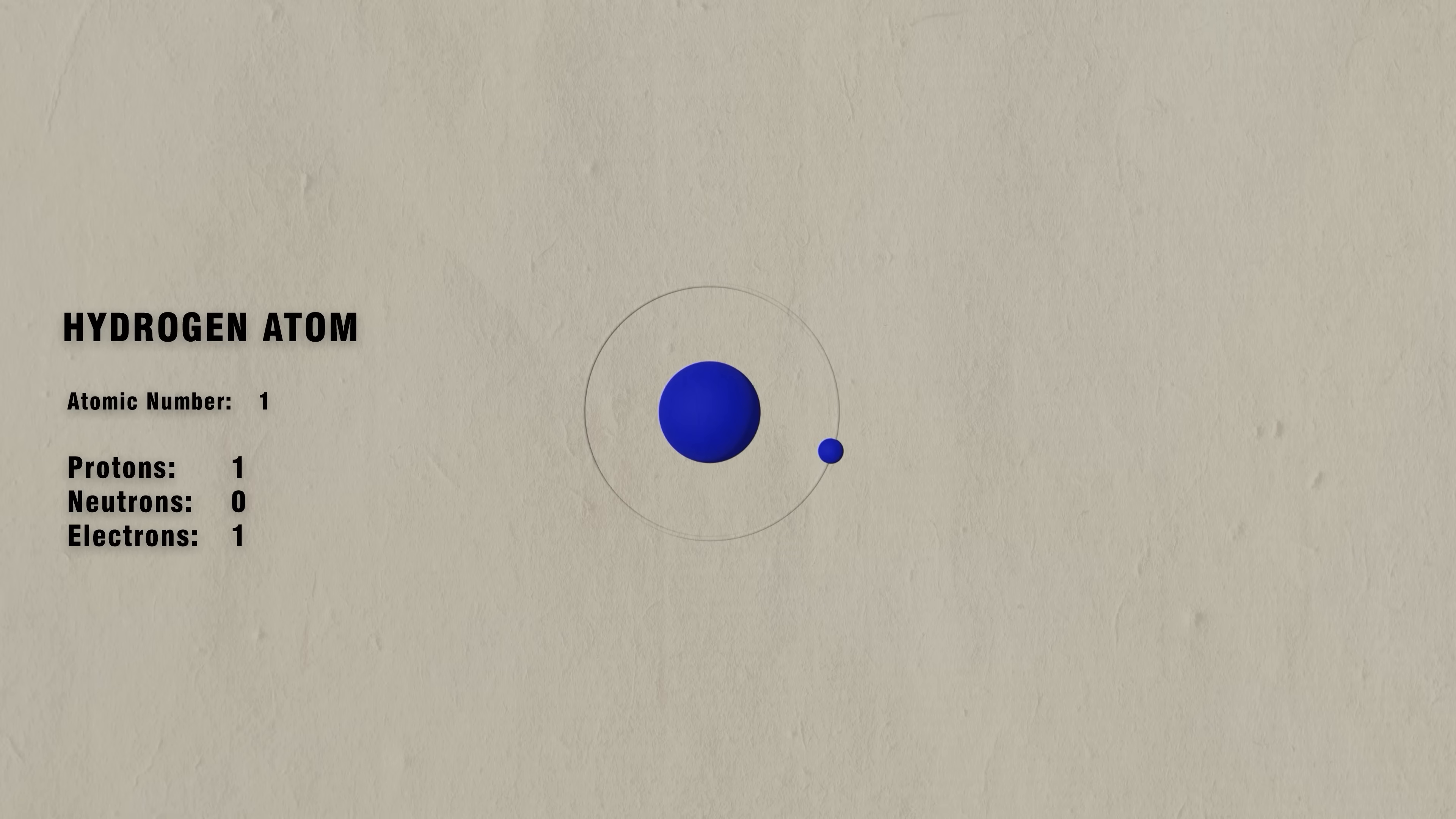The hydrogen atom is the simplest and most fundamental atom of them all, consisting of a single proton and a single electron. It is the most common element in the universe, making up roughly 75% of all visible matter.